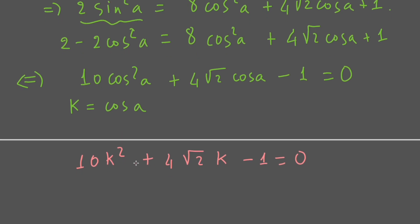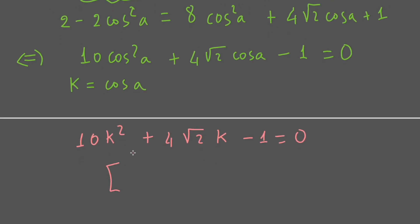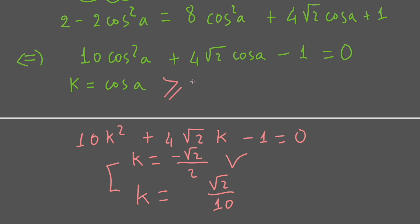There are two roots. The first is k equal to negative square root of 2 over 2. The second is k equal to the square root of 2 over 10. The first value is rejected because k equal to cos a must be greater than 0, so it is out of the valid range. We therefore select the second case: k equal to the square root of 2 over 10.